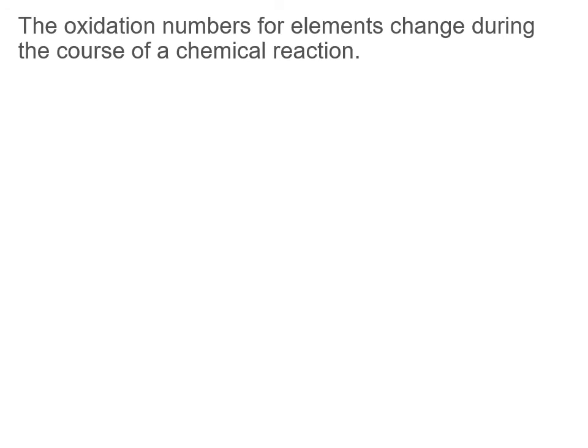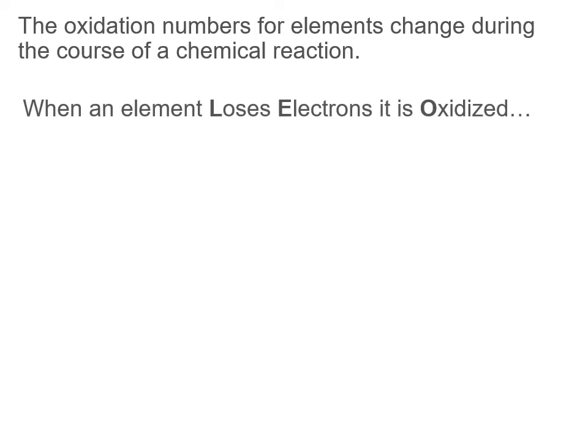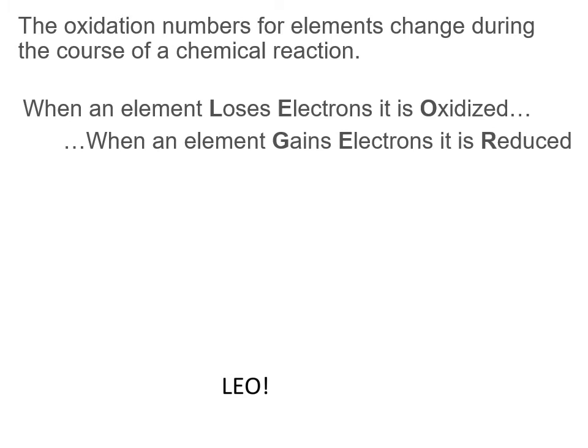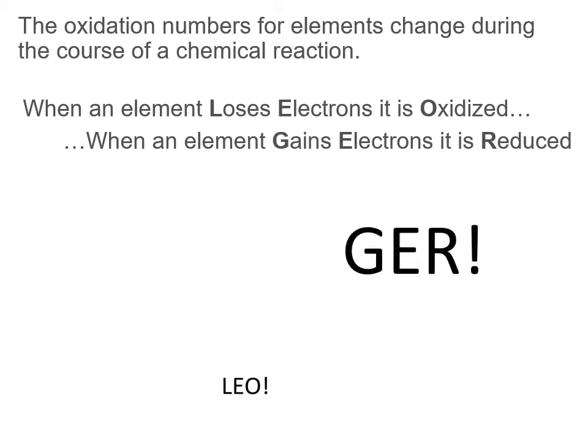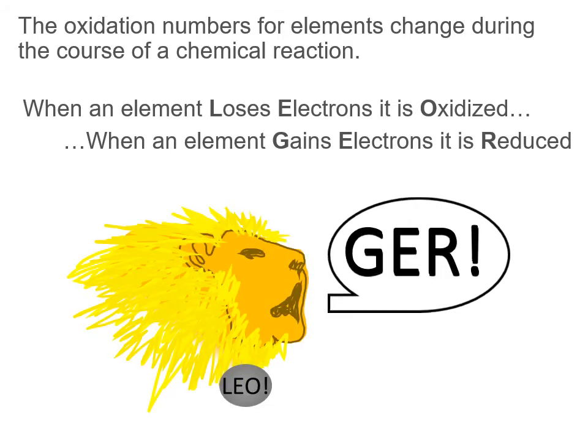So why is this important? The oxidation numbers for elements change during the course of a chemical reaction. When an element loses electrons, it is oxidized — loses electrons, oxidized — LEO. When an element gains electrons, it is reduced — gains electrons, reduced — GER. This is going to help us remember when something is oxidized or when something is reduced. It is an old chemistry saying that goes: LEO the lion goes GER.